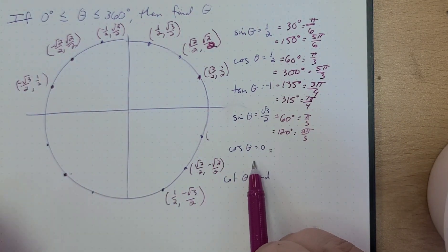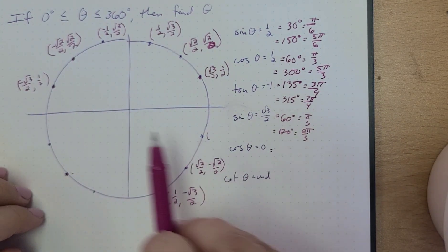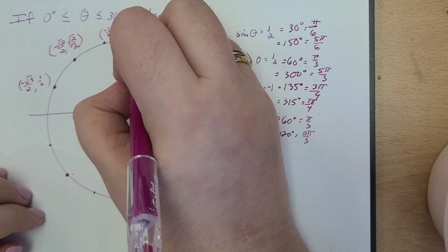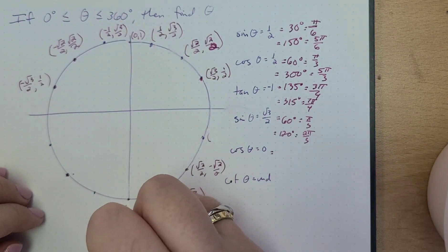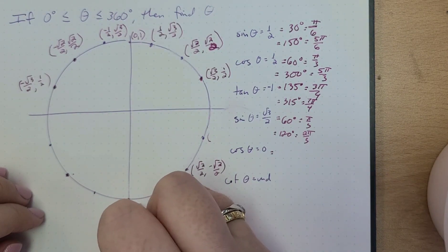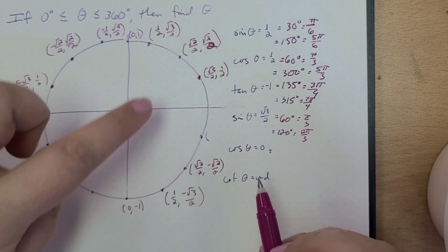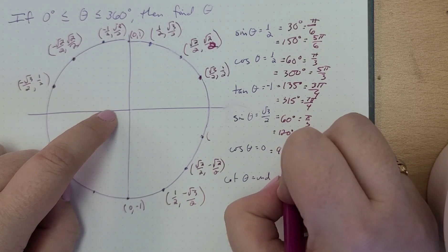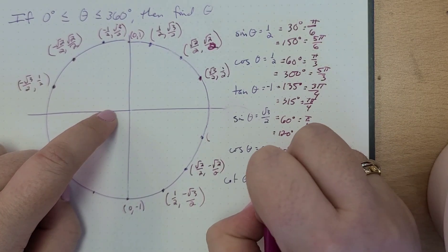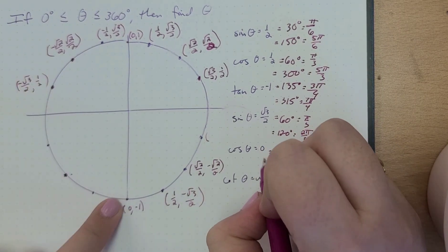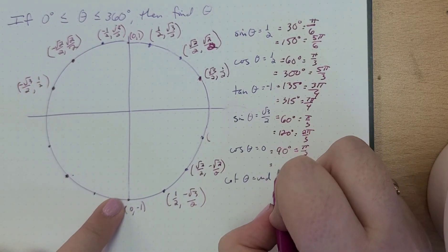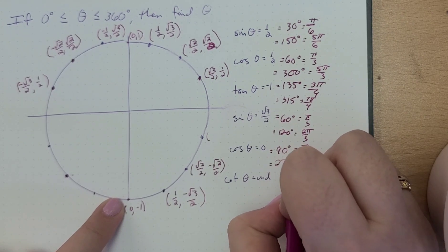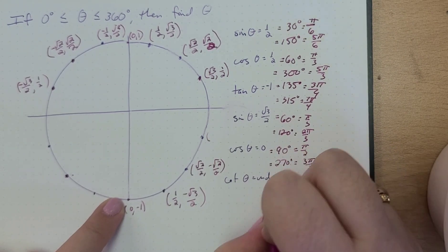Cosine of theta is zero. That's going to happen right here because this is (0, 1). And this is actually (0, −1). So this is at 90 degrees, which is π/2. And this is at 270 degrees, which is 3π/2.